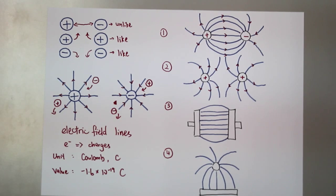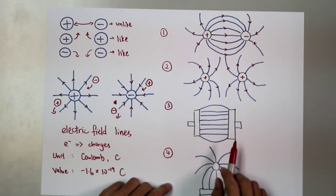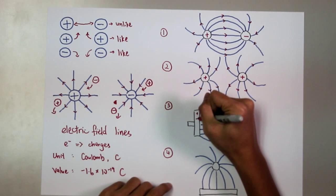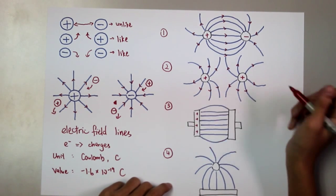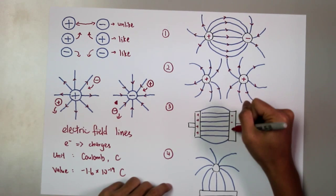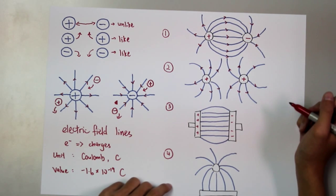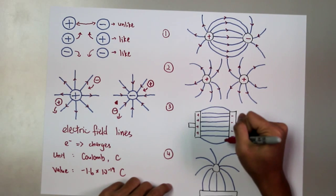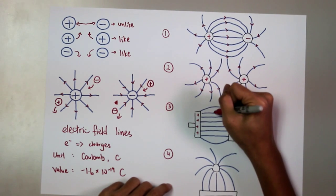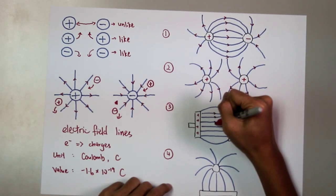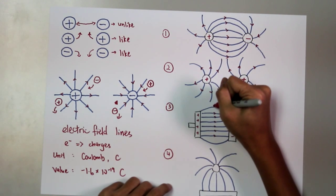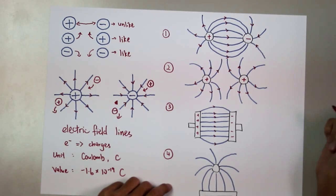And for the third condition, when there are one positively charged plate and another negatively charged plate, the electric field lines will be uniform except for the sides, and it still obeys the rule where the lines point from the positive charge to the negative charge.